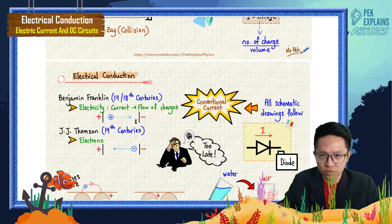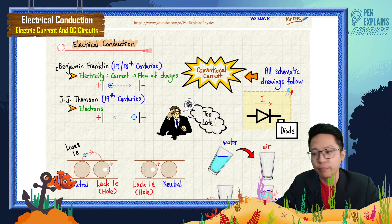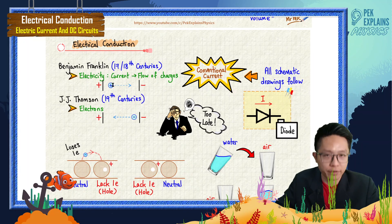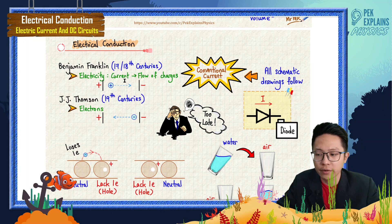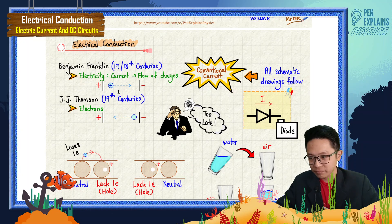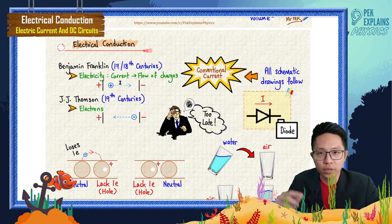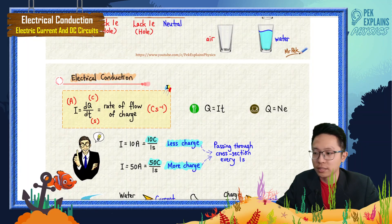This is a very good question. We have to go back to history. In the 17th or 18th centuries, a scientist called Benjamin Franklin first discovered about current electricity. He discovered that current is actually the flow of charges. At that time, Benjamin only thought that it is the positive charge that flows — he hadn't discovered electrons yet. He defined current as the flow of charge.